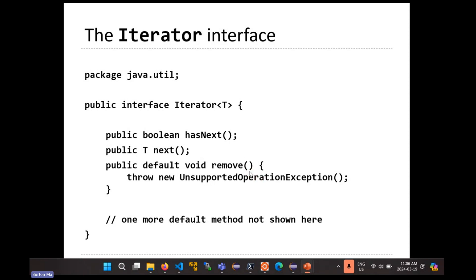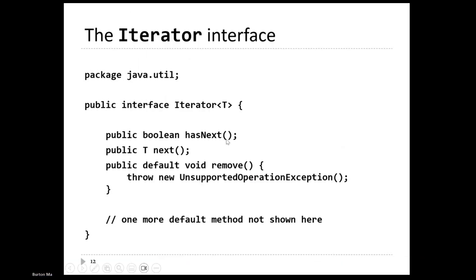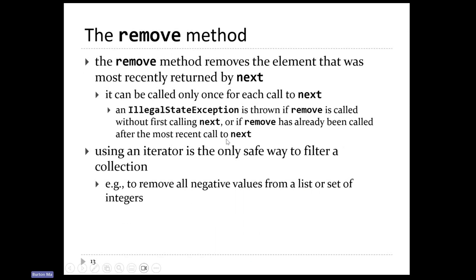For our list iterator, we want to provide remove so that you can actually remove an element from the list as you're iterating over it. In order to do this correctly, you have to look at what remove says it actually does. Remove behaves a bit oddly — if you look at the definition of remove, it says that remove removes the element that was most recently returned by next.